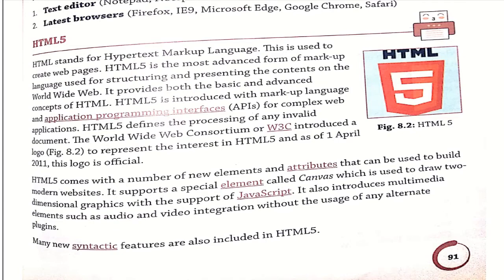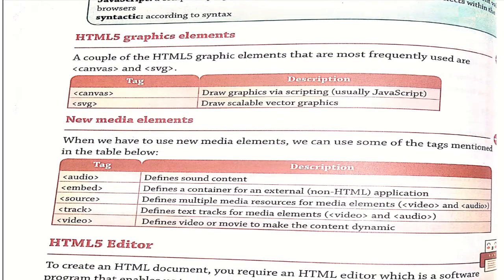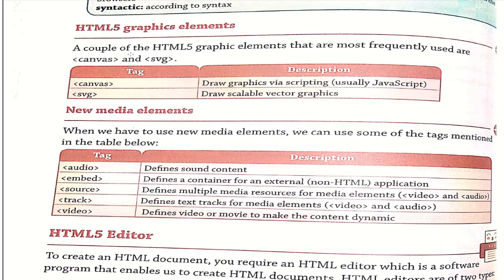A couple of HTML5 graphic elements that are most frequently used are Canvas and SVG. Canvas is used to draw graphics via scripting, and SVG is used to draw scalable vector graphics. For drawing graphics by coding, we use the Canvas tag; for scalable vector graphics, we use SVG.